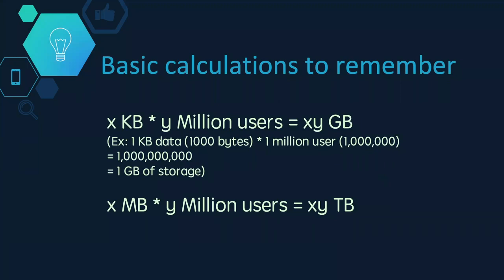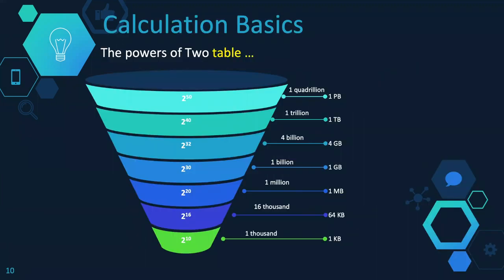Here are the very basic calculations to remember: if there are X kilobytes and Y million users, that calculates to X×Y gigabytes. For example, 1 KB of data with 1 million users comes around 10^6 bytes total. If you have X megabytes with Y million users, that gives X×Y terabytes. The kilobyte scales at 10^3, so accordingly the outcome also scales by 10^3 — from gigabyte to terabyte.